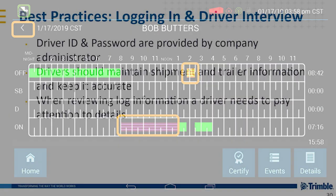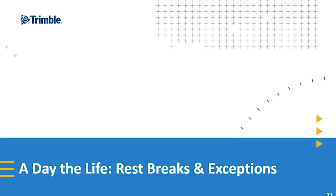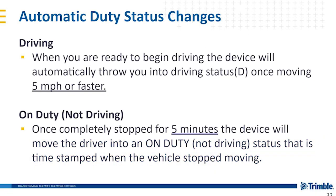Best practices for logging in and driver info: driver ID and password are provided by the company administrator — you will receive that as a new driver after finishing orientation. Make sure you maintain the shipment and trailer information and keep it accurate for the loads you're hauling. When reviewing your log information, the driver needs to pay close attention to the details. There are automatic duty status changes. For driving, when you are ready to begin driving, the device will automatically put you into driving status once moving five miles per hour or faster. For on-duty not driving, once you are completely stopped for five minutes, the device will move the driver into on-duty not driving status, time-stamped when the vehicle stopped moving.